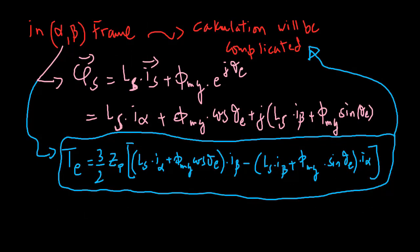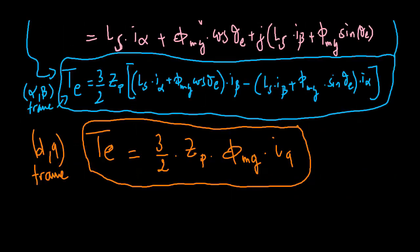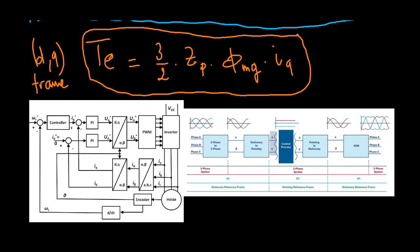This explains why in the control strategies chosen for the later videos, the mathematical model in the DQ reference frame is predominantly used for the reason that there is a simple relation between the electromagnetic torque Te and the IQ current. It is worthwhile to emphasize that in the context of controlling a PMSM drive, if the model used for the control system design is based on the alpha beta reference frame, then the manipulated variables are the voltage variables V alpha and V beta. Similarly, if the model in the DQ reference frame is used in the design, then the manipulated variables are the voltage variables VD and VQ.